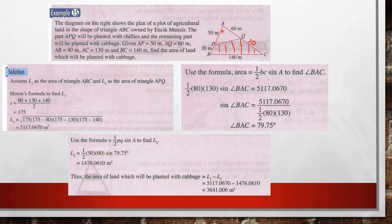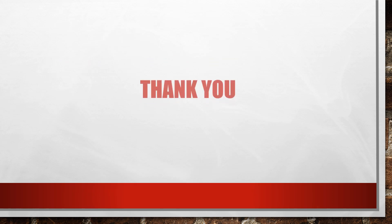So you take the whole triangle 5,117.0670 minus the area of APQ 1,476.0610. So you will get 3,641.06 square meters. At page 262. Thanks for watching.